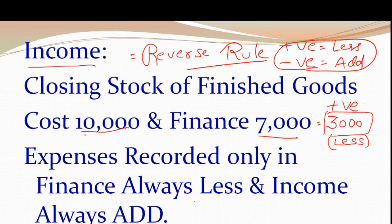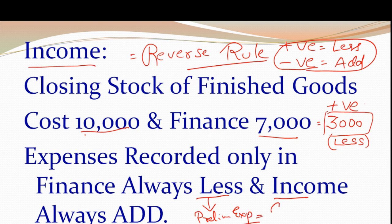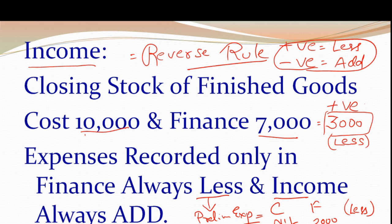कुछ points ऐसे होते हैं — expenses recorded only in finance। इसके लिए ज़्यादा rule apply करने की ज़रूरत नहीं। जो चीजें सिर्फ finance में आती हैं और वो expense हैं तो less हो जाएगा; अगर income है तो add हो जाएगा। Example: preliminary expenses — cost में nil है, finance में 2,000 है, तो less करना है। Interest on investment — costing में nil है, finance में 3,000 है, तो add करेंगे।